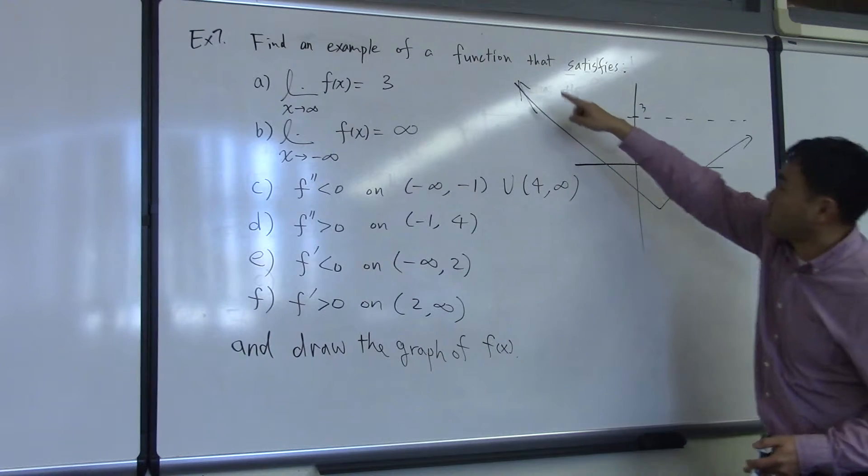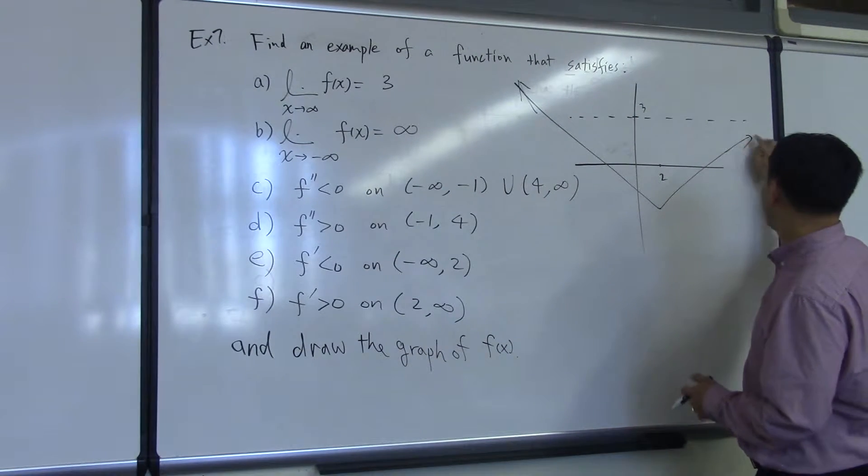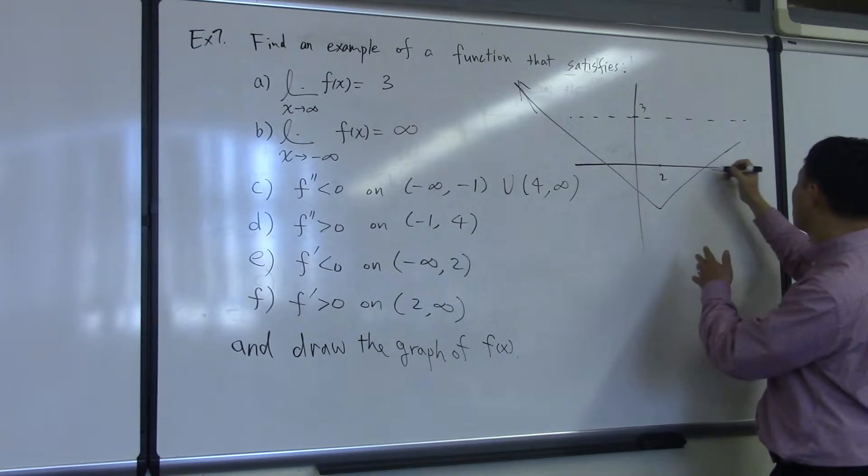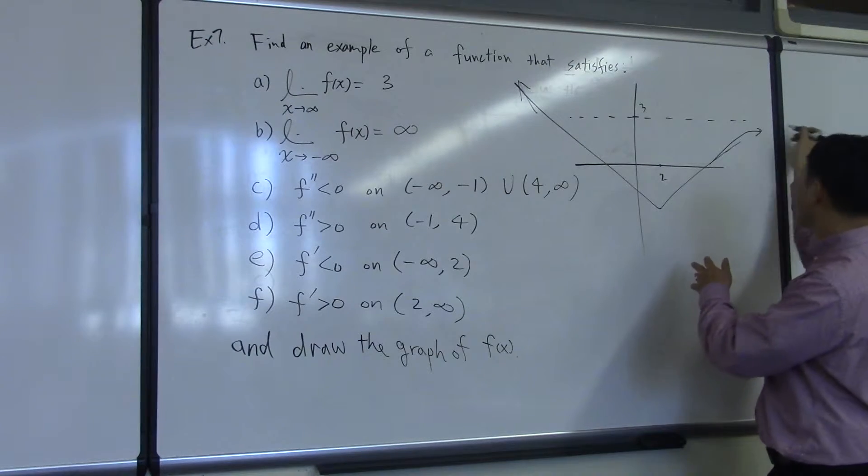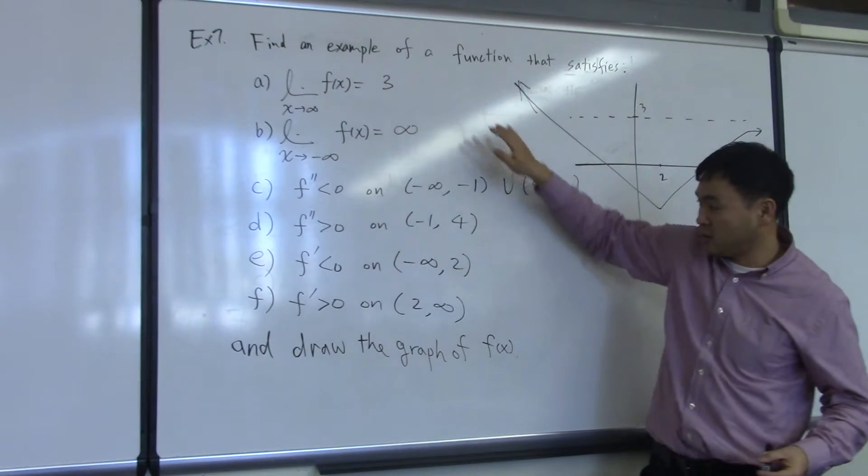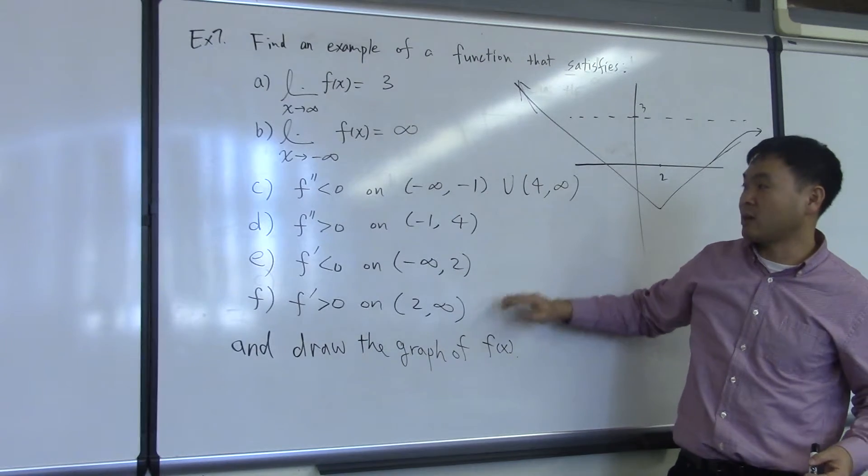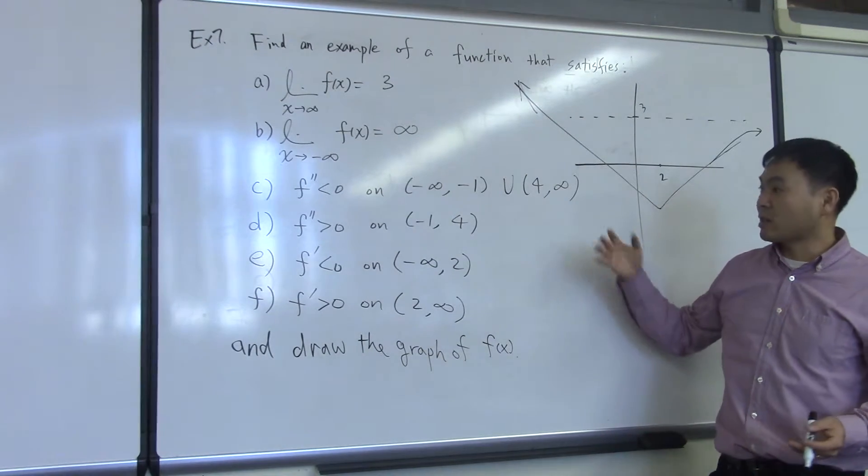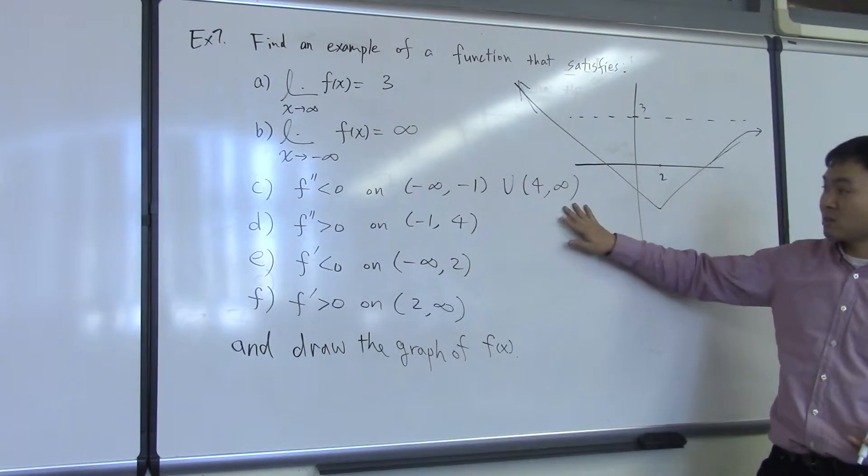So if I just have a graph that's doing like that, getting closer and closer to this, that's satisfied A, B, E, and F. So all I need to do now is add the concavity.